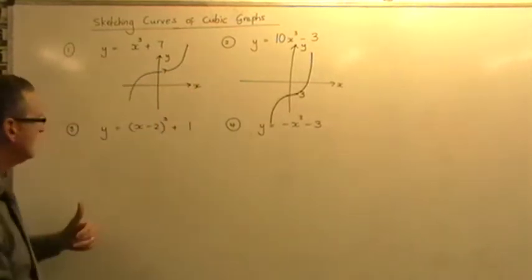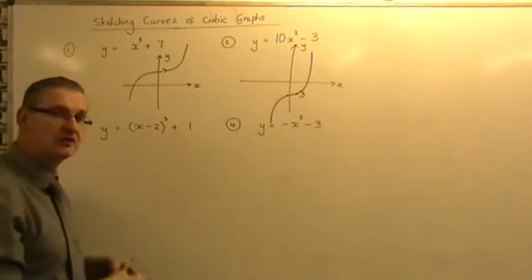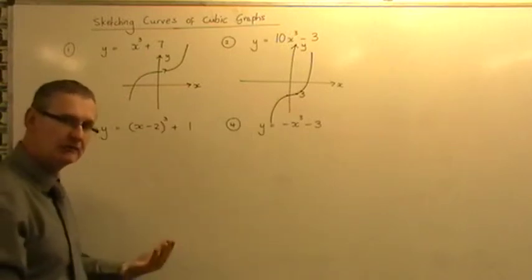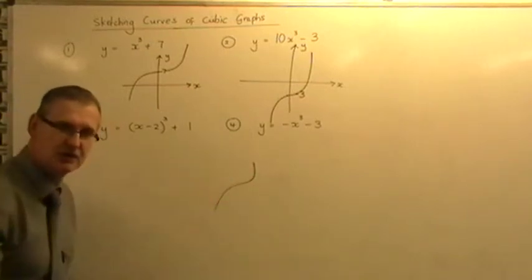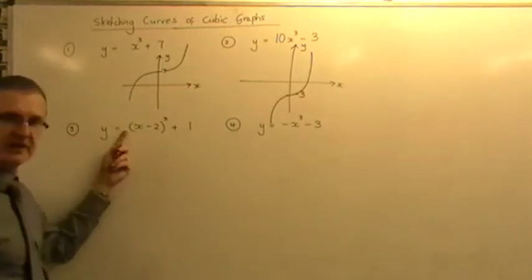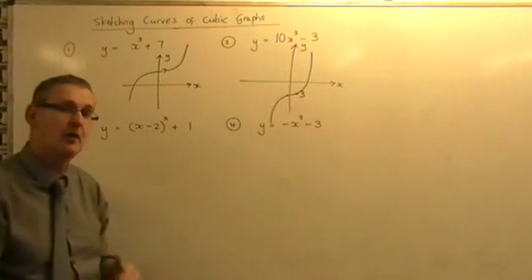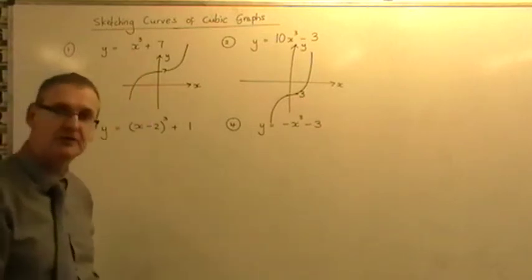OK, this one here, what we've got here is x inside a bracket, but the bracket itself is being cubed. So once again, it's going to be a cubic graph. So it's going to look something like that, that basic shape. OK, next, well there's no number in front of it, so it's not going to be any steeper or any shallower than the original x cubed curve that we started with. Plus 1 on the end means it's going to be shifted up one place.